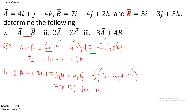Continuing the expansion of minus 3C: the minus sign on the minus 3j term becomes positive, giving us plus 9j. Then minus 3 times 5k gives minus 15k.